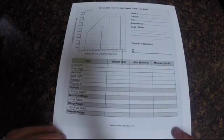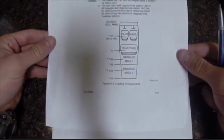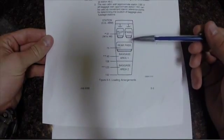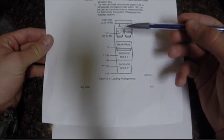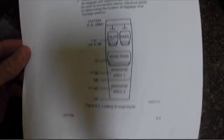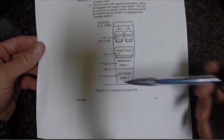All right, so to do the weight and balance you're going to need a weight and balance sheet like this one, and the proper arms for your specific plane which will be found in the plane's POH, the operator handbook. I just printed this one off so it's easier and you can see it gives you the different arms of the different areas.